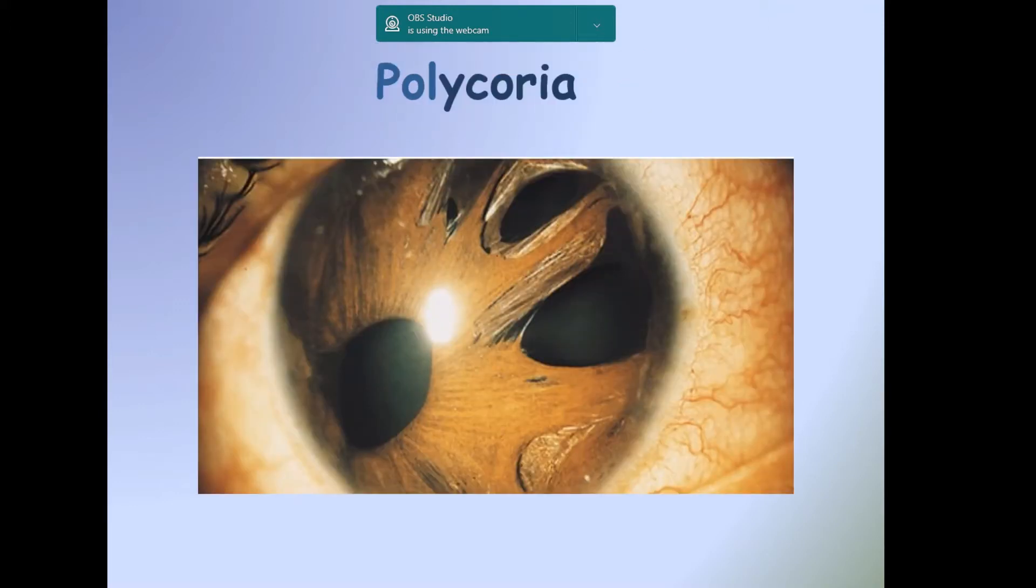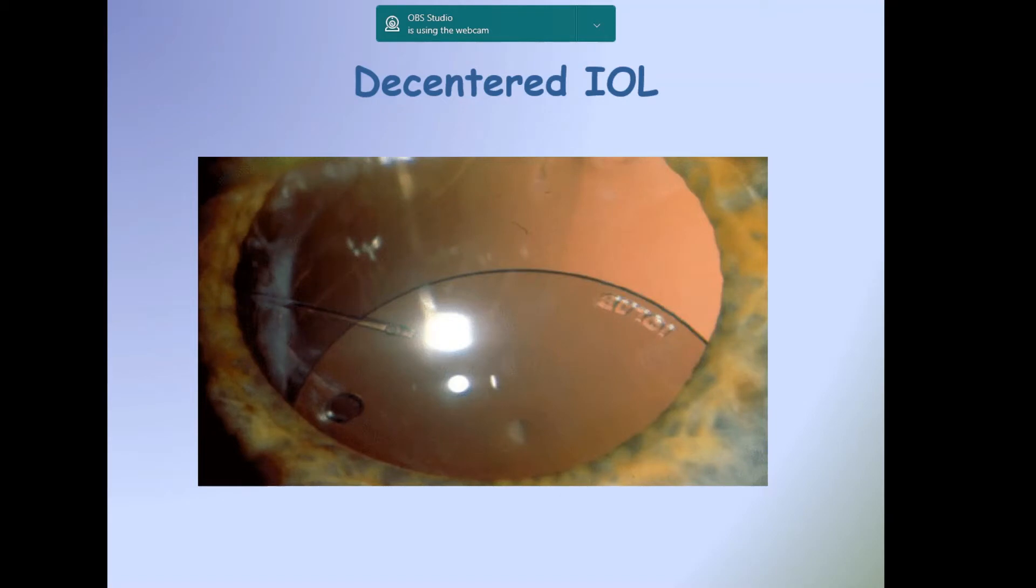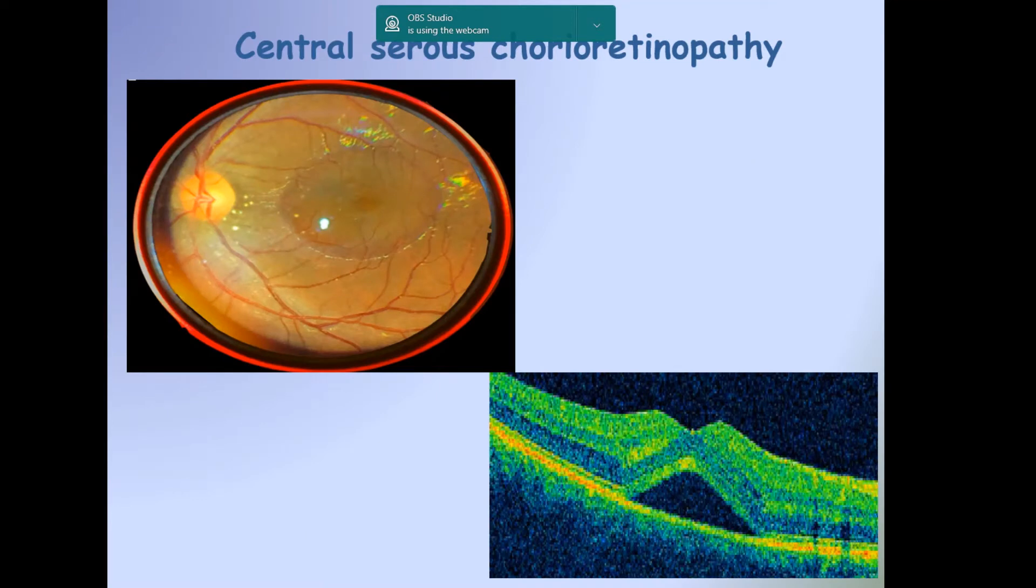Here is a photo of polycoria in iridocorneal endothelial syndrome with progressive iris atrophy. This photo shows ectopia lentis with a clear lens bisecting the pupil. Here is central serous chorioretinopathy where the patient will complain of micropsia or metamorphopsia, which may lead to a difference in retinal image size magnification between both eyes with anisoconia, which may lead to failure of fusion detected as diplopia.